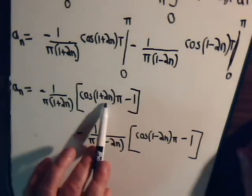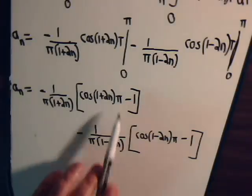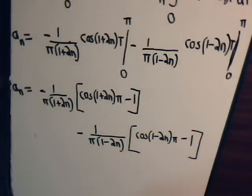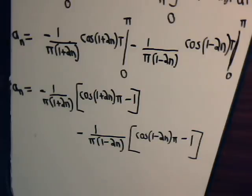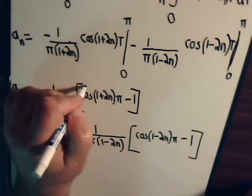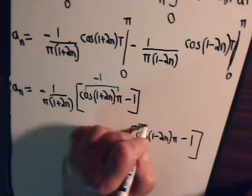So this is the kind of expression we're getting for a sub n. Now notice that this right here is always going to be an odd number, because here this is always even. Even number plus an odd number is an odd number. And the cosine of any odd multiple of π, that is π, 3π, 5π, 7π, etc., that's negative 1.